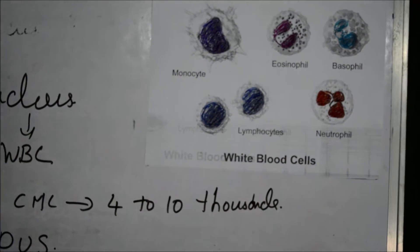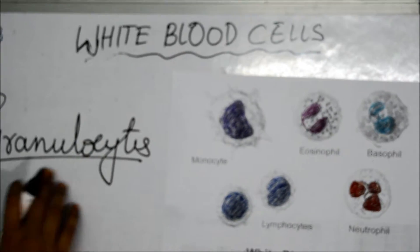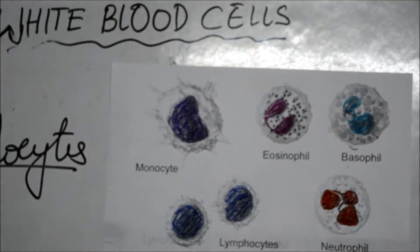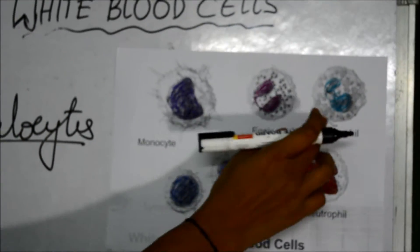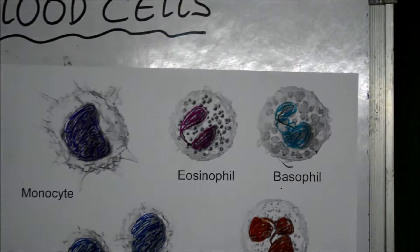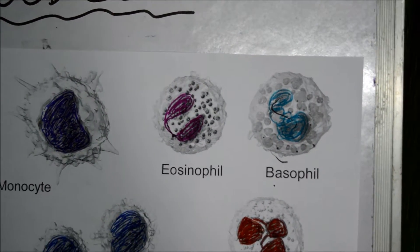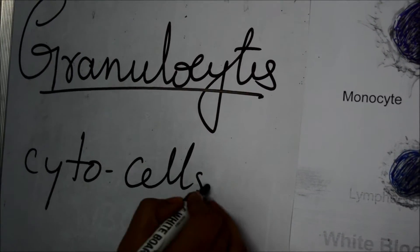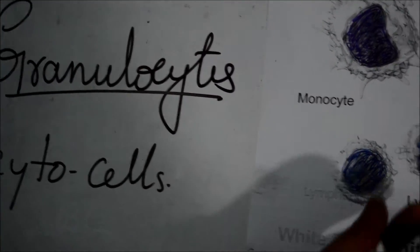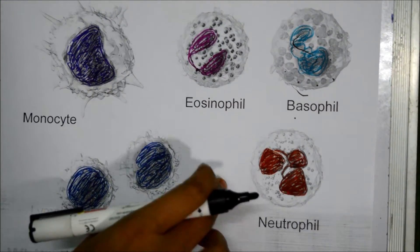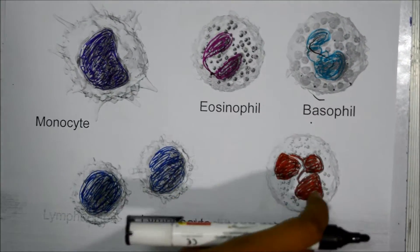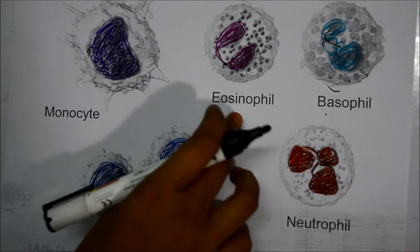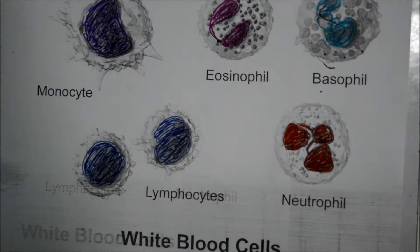Now let us see about the granulocytes. These cells have different types of granules in their cytoplasm. The nucleus in these cells is irregular in shape and each cell has lobes. There are three types: eosinophil, basophil, and neutrophil.